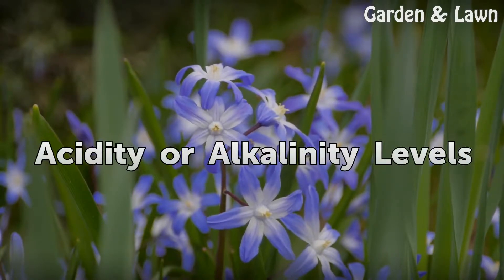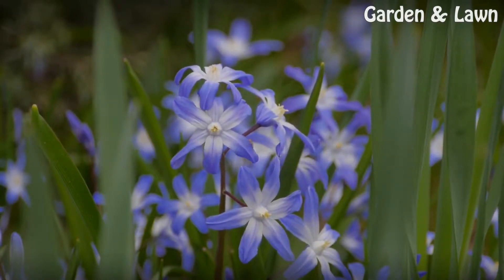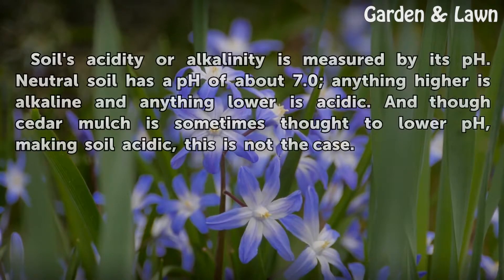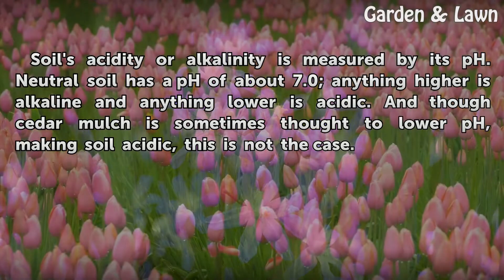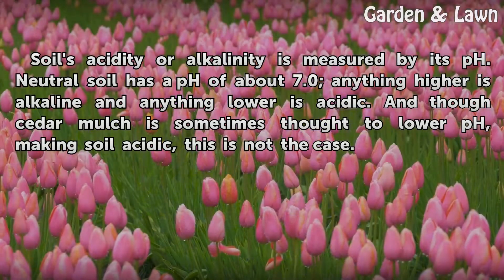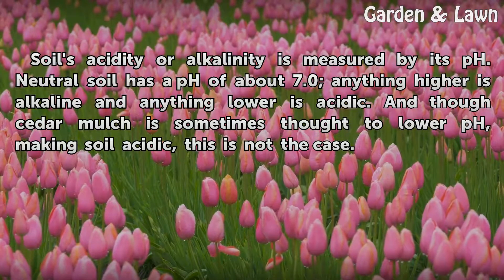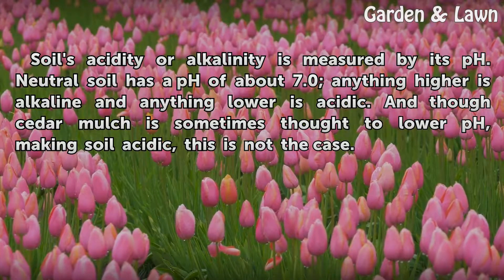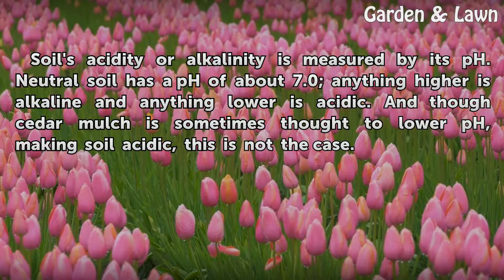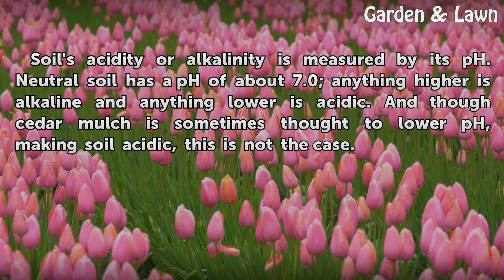Acidity or Alkalinity Levels. Soil's acidity or alkalinity is measured by its pH. Neutral soil has a pH of about 7.0 — anything higher is alkaline and anything lower is acidic. And though cedar mulch is sometimes thought to lower pH, making soil acidic, this is not the case.